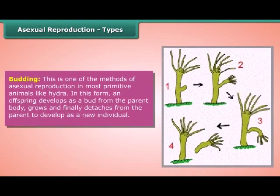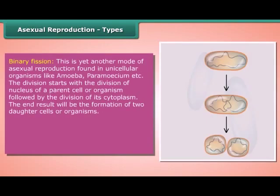Asexual reproduction — types. Budding: this is one of the methods of asexual reproduction found in most primitive animals like hydra. An offspring develops as a bud from the parent body, grows, and finally detaches from the parent to develop as a new individual. Binary fission: another mode of asexual reproduction found in unicellular organisms like amoeba, paramecium, etc. The division starts with the division of the nucleus of a parent cell, followed by the division of its cytoplasm. The end result is the formation of two daughter cells or organisms.